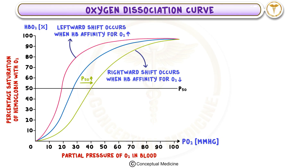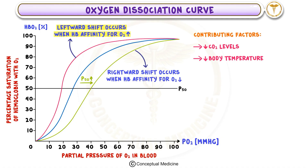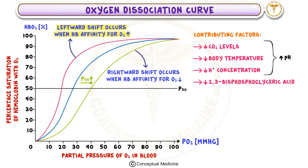On the other hand, a leftward shift occurs when hemoglobin's affinity for oxygen increases, meaning it holds on to oxygen more tightly. This happens in conditions like decreased carbon dioxide levels, lower body temperature, reduced hydrogen ion concentration (raising the pH), and lower levels of 2,3-BPG. While this shift enhances oxygen binding, it also means oxygen release to tissues is reduced.